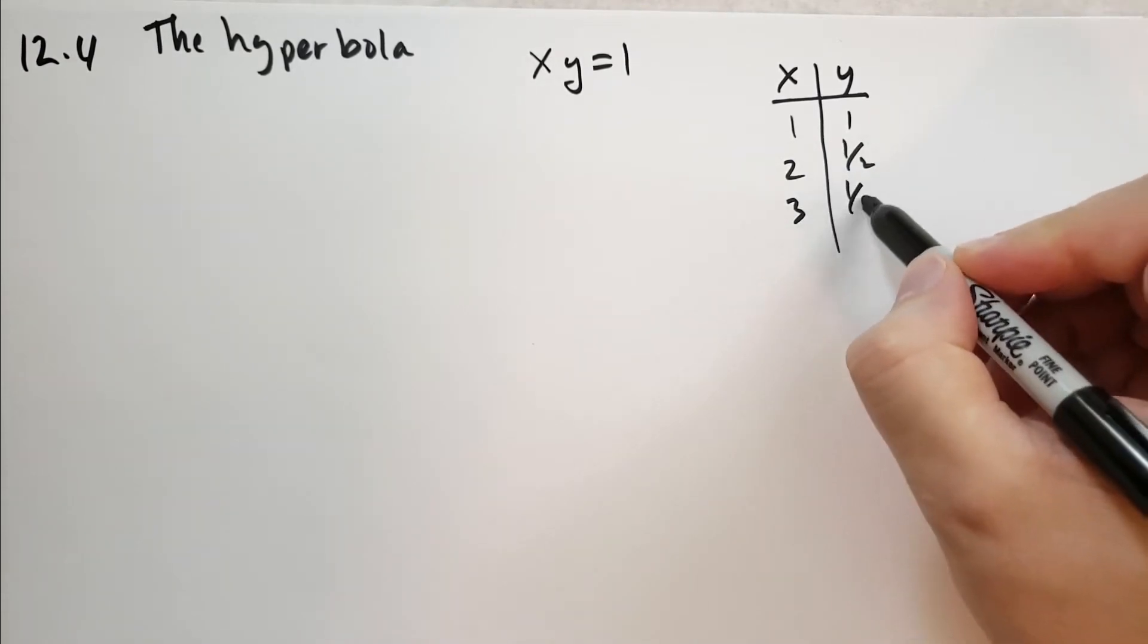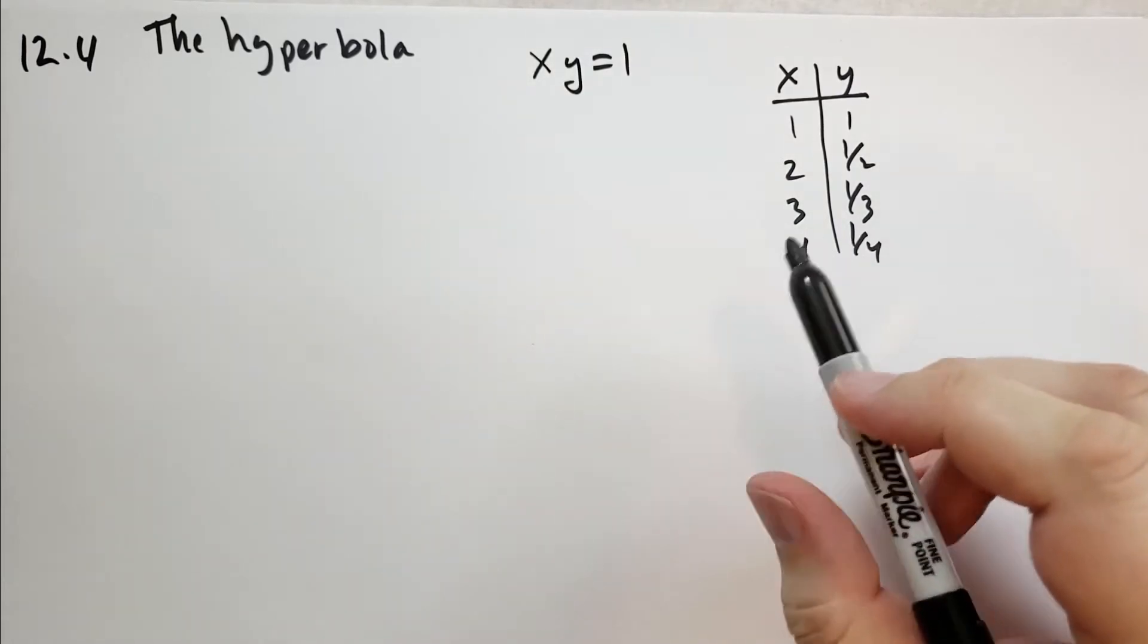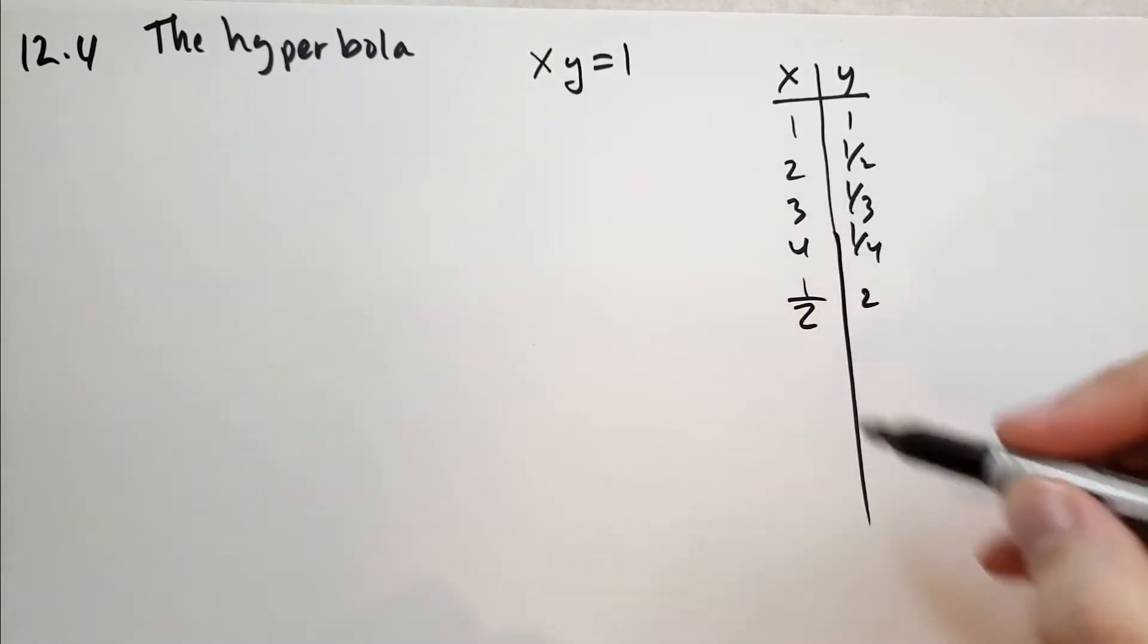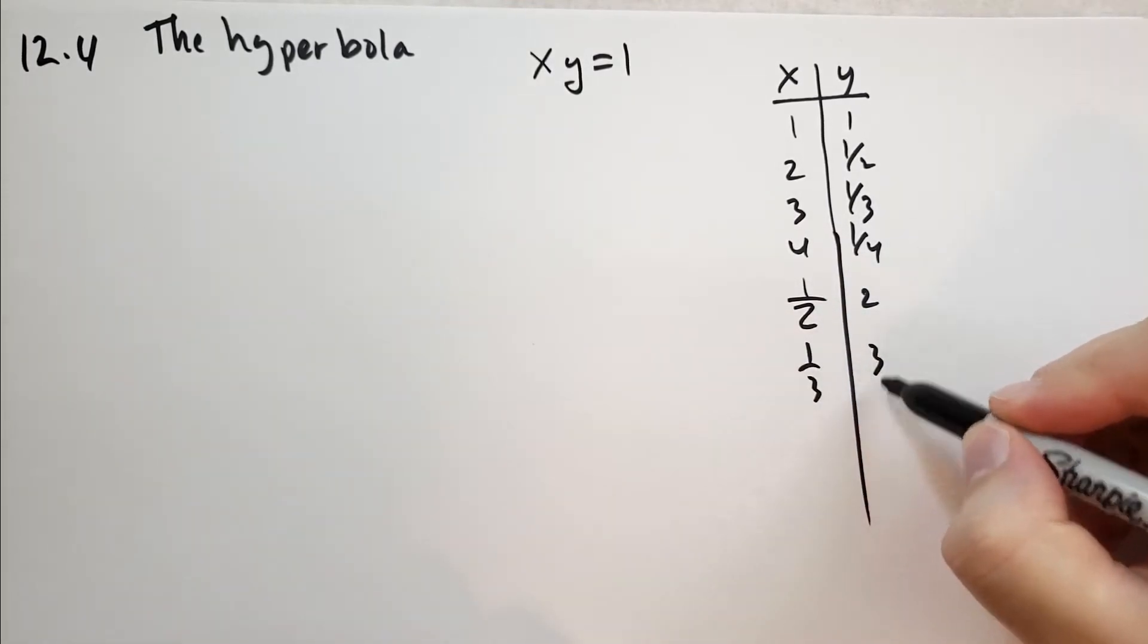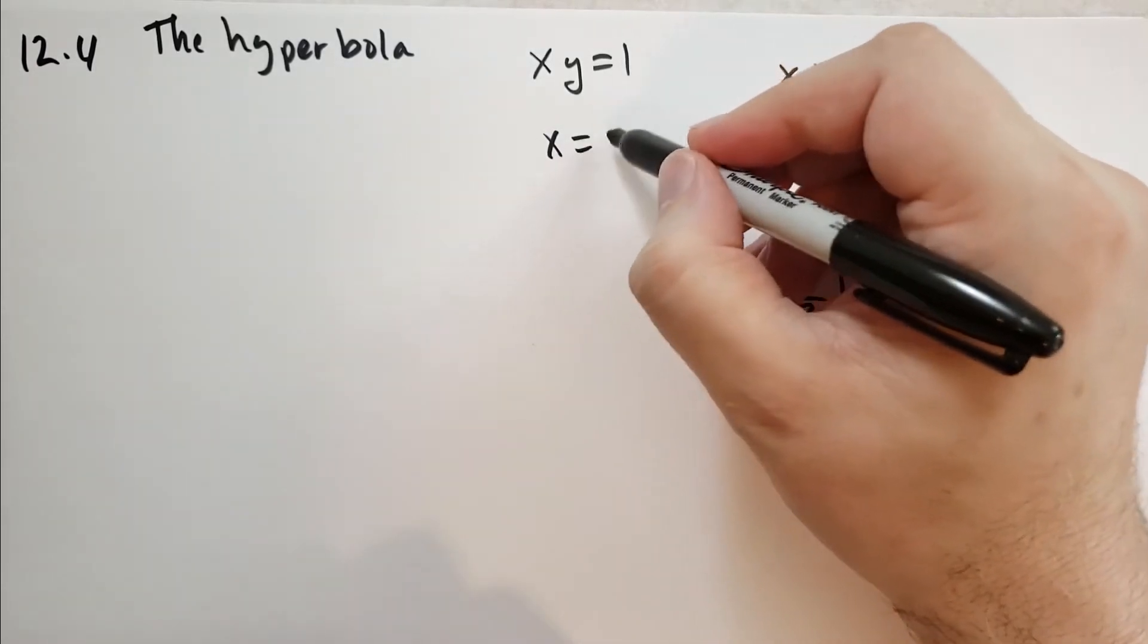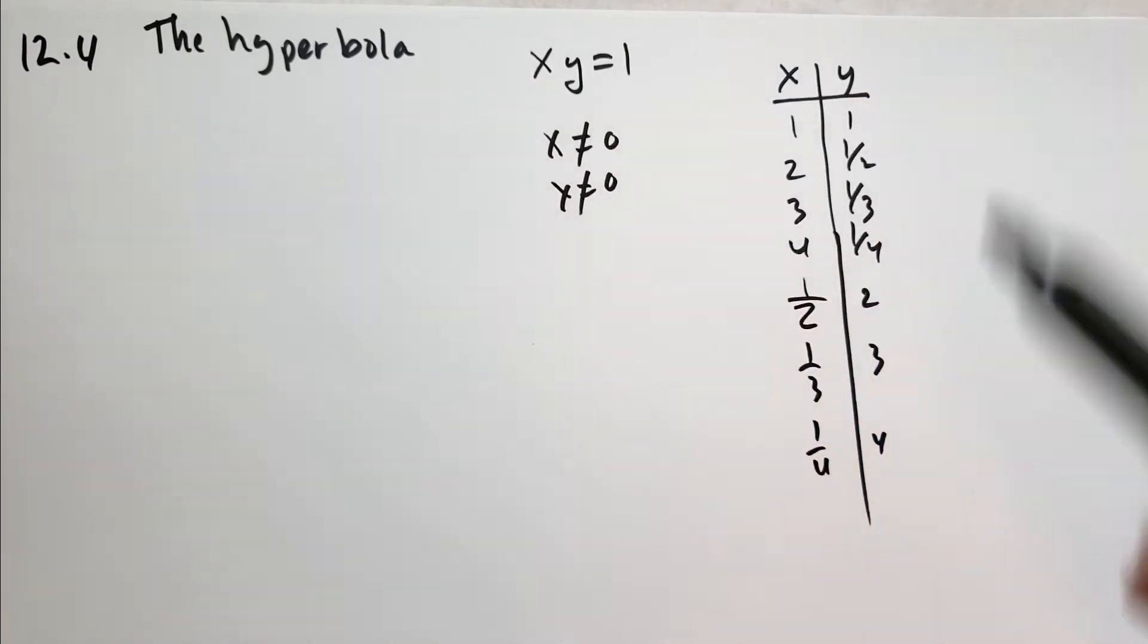4 and 1 quarter, and so on. But you also have 1 half and 2, 1 third and 3, and 1 quarter and 4. Note that x and y cannot be 0 because if either of those were 0, then the entire thing must be 0.